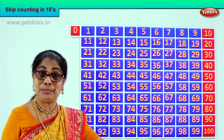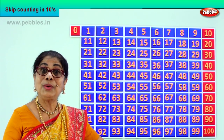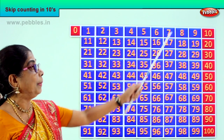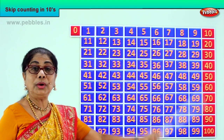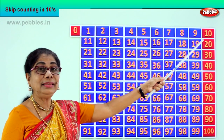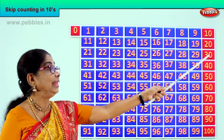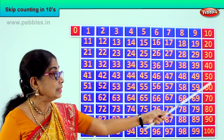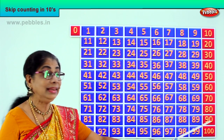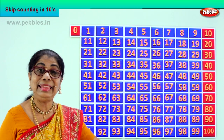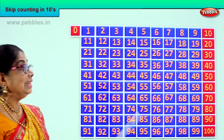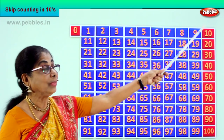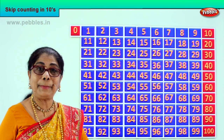Ten times we jump. What are we doing? Counting in tens. Look at the pattern: zero, 10, 20, 30, 40, 50, 60, 70, 80, 90, and 100. In skip counting from zero to 100, look at the pattern.